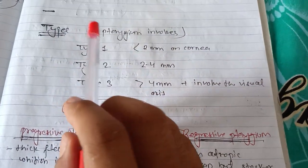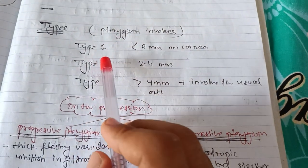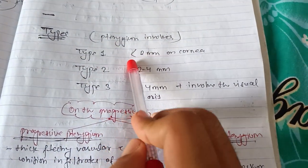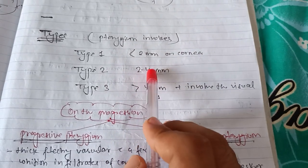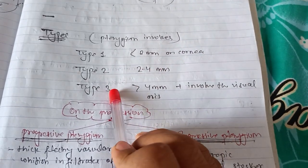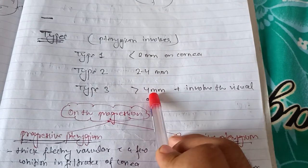There are types of pterygium depending on corneal involvement. Type 1: pterygium involves less than 2mm on cornea. Type 2: pterygium involves 2 to 4mm on cornea. Type 3: pterygium involves more than 4mm on cornea and involves the visual axis.